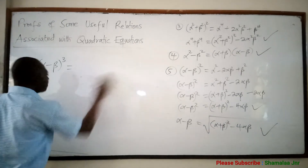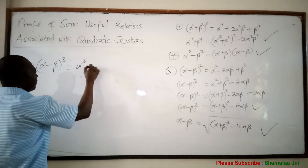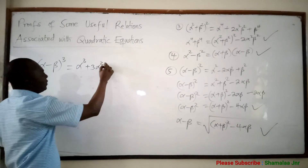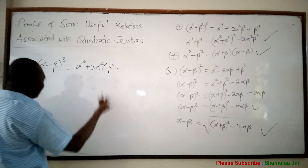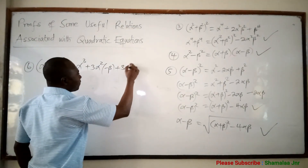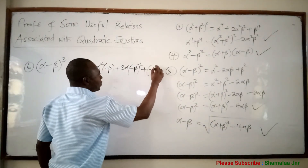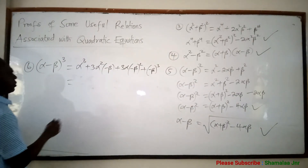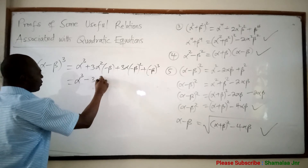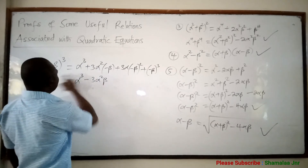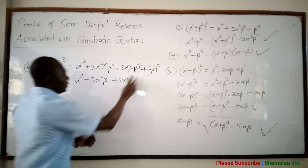Number six: alpha minus beta all raised to the power 3. Using Pascal's triangle, the expansion gives alpha cubed, then the next term with coefficient 3 is plus 3 alpha squared times negative beta, so minus 3 alpha squared beta. The next term with coefficient 3 is plus 3 alpha times negative beta squared, so plus 3 alpha beta squared. The last term is negative beta all raised to the power 3, so minus beta cubed.